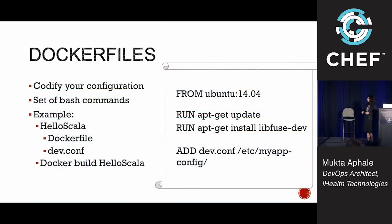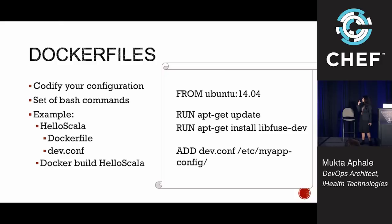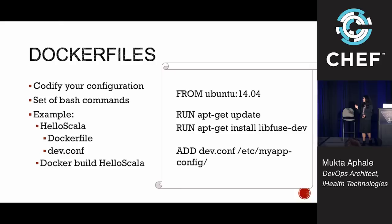This is how a Dockerfile looks. Dockerfiles are something with which you codify your configuration — it's a set of Bash commands. This is a very simple example where you take an Ubuntu image, do some kind of execution, write something. As an example, consider there is a repository called Haloscaler. You write a Dockerfile which has whatever you need, probably some configurations, and you add that configuration to your Docker image using the ADD command, which is like a copy. Then you run the command 'docker build Haloscaler' and it generates a Docker image for you.